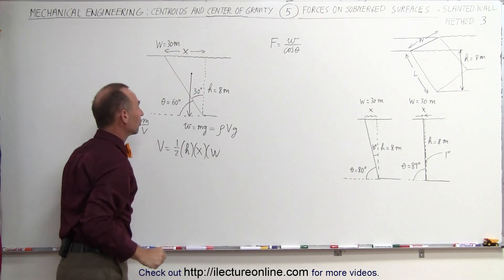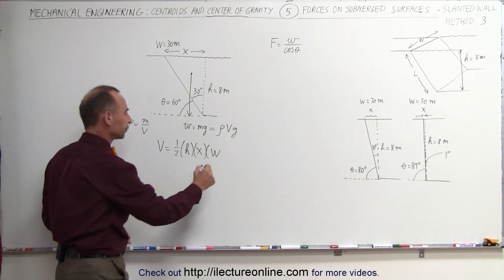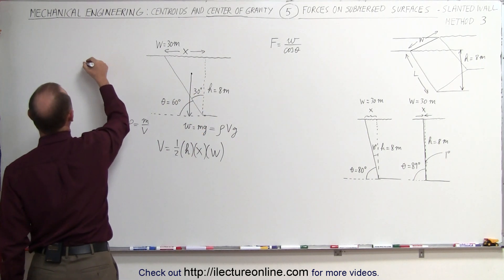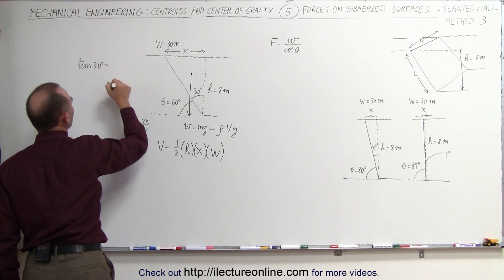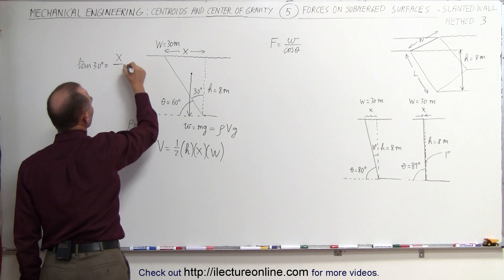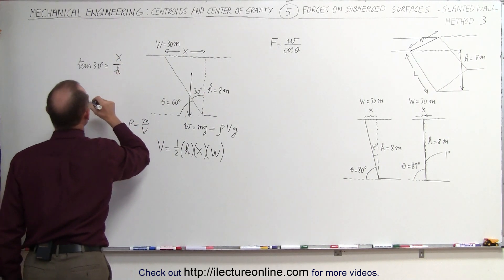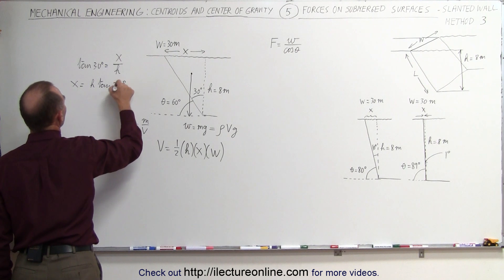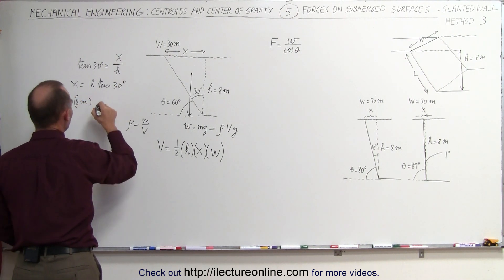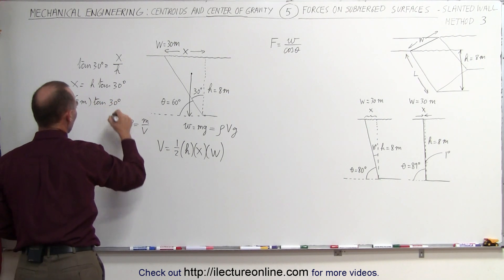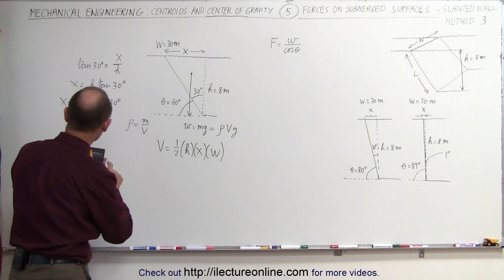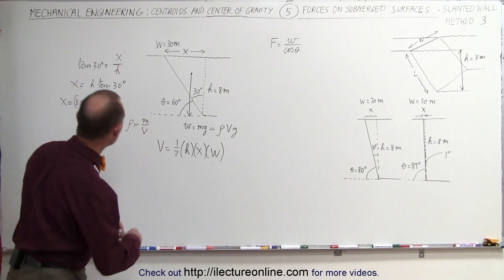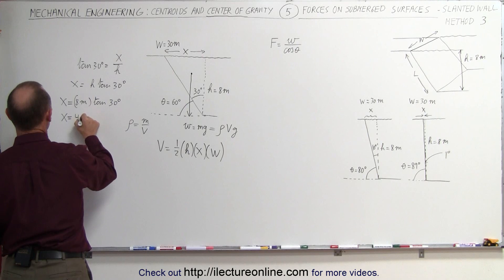The width of the dam is 30 meters and the height is 8 meters. We use the tangent to find x, since the tangent of 30 degrees equals the opposite side divided by the adjacent side h. So x equals h times the tangent of 30 degrees, which is 8 meters times tan(30°), giving us x equal to 4.62 meters.